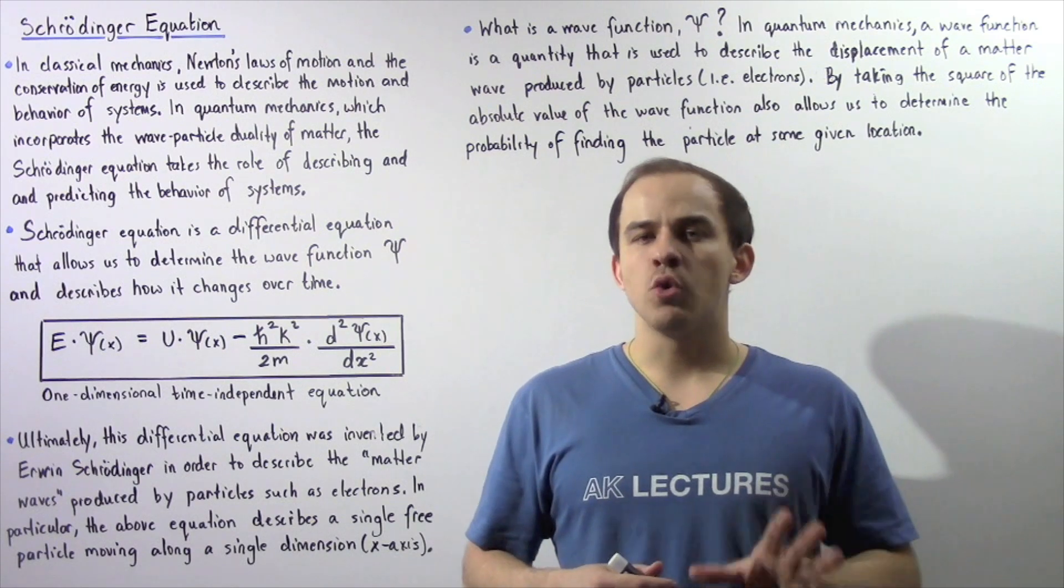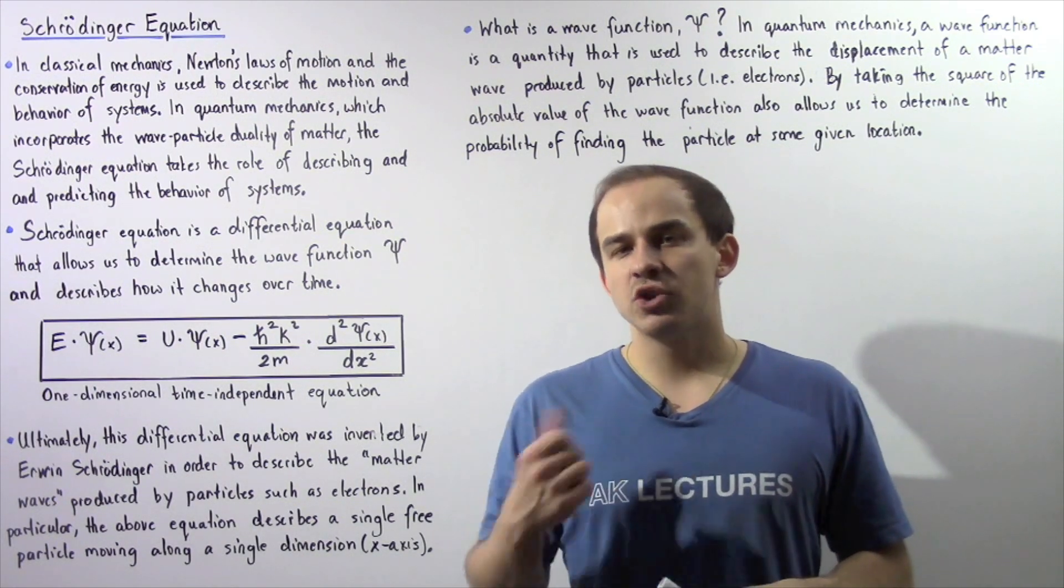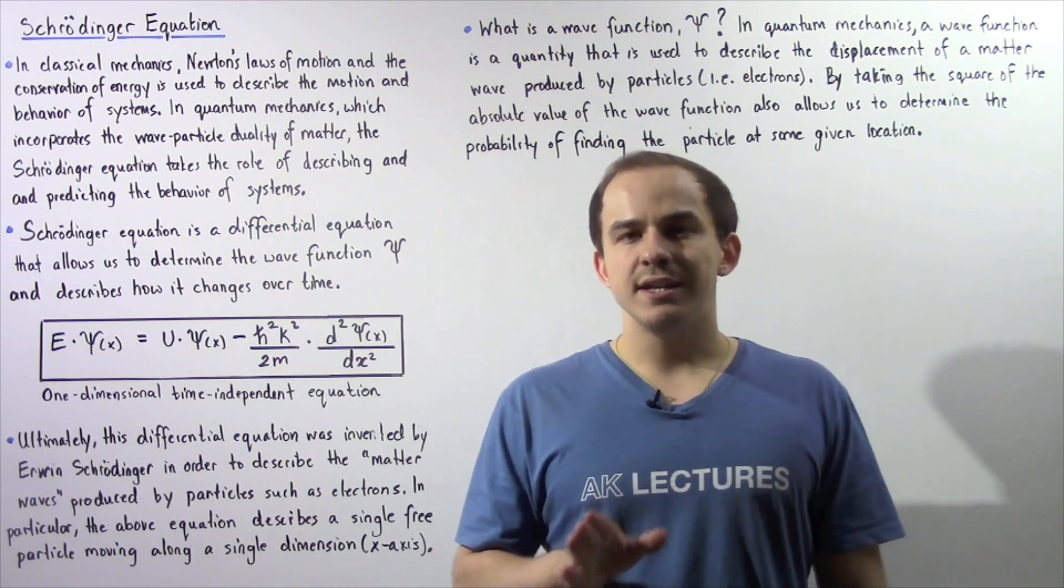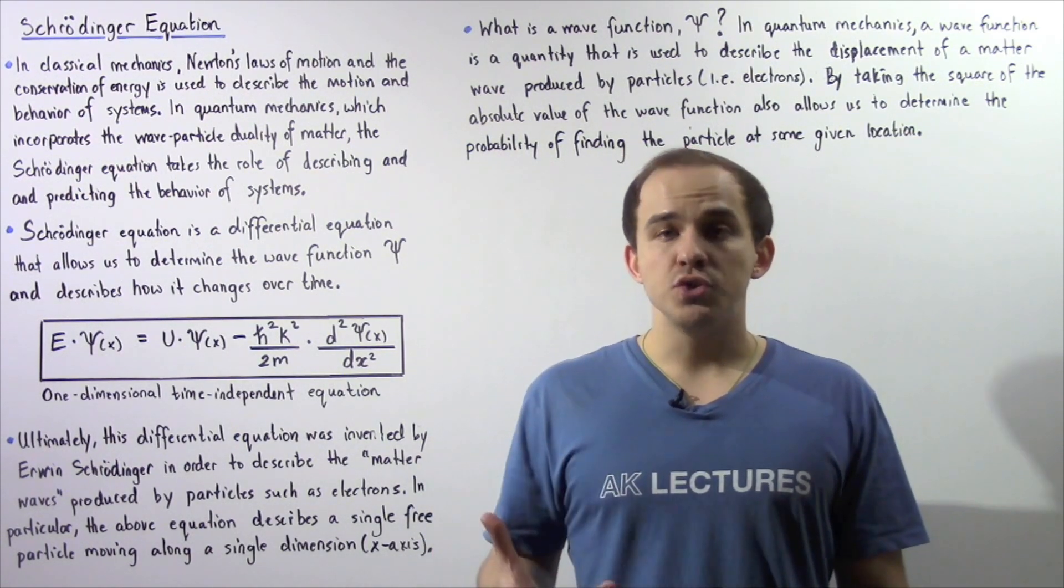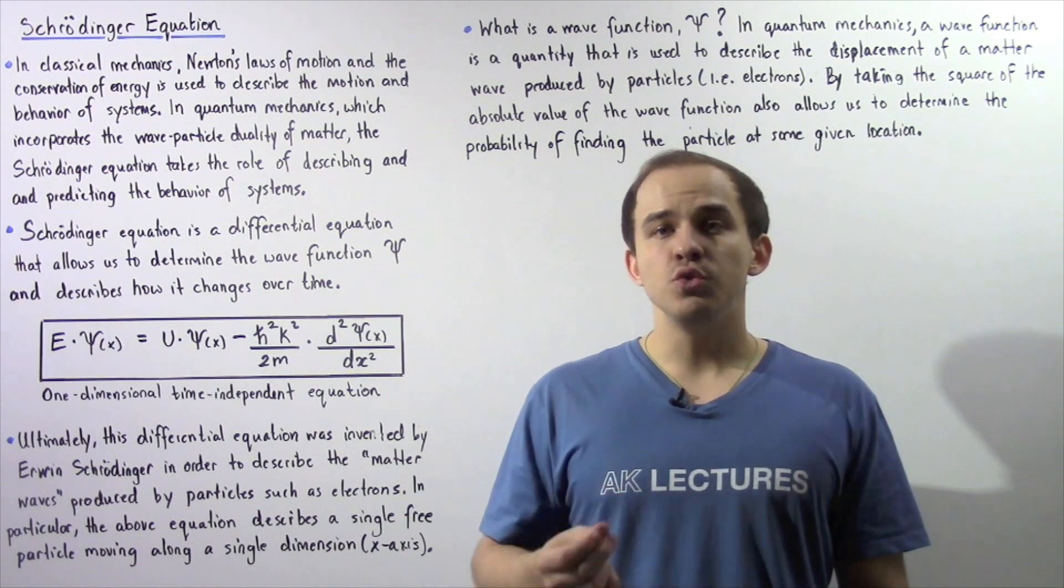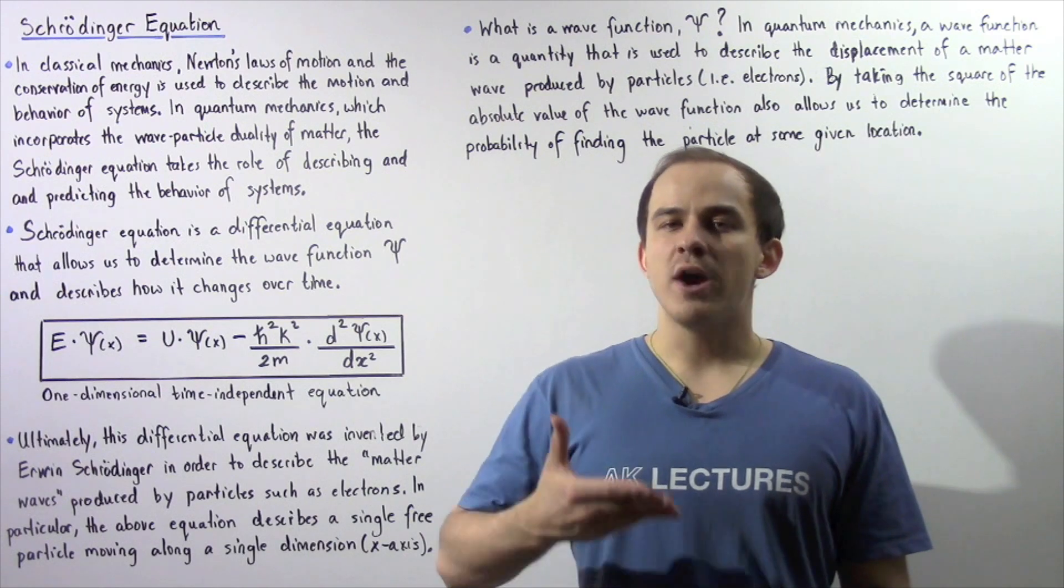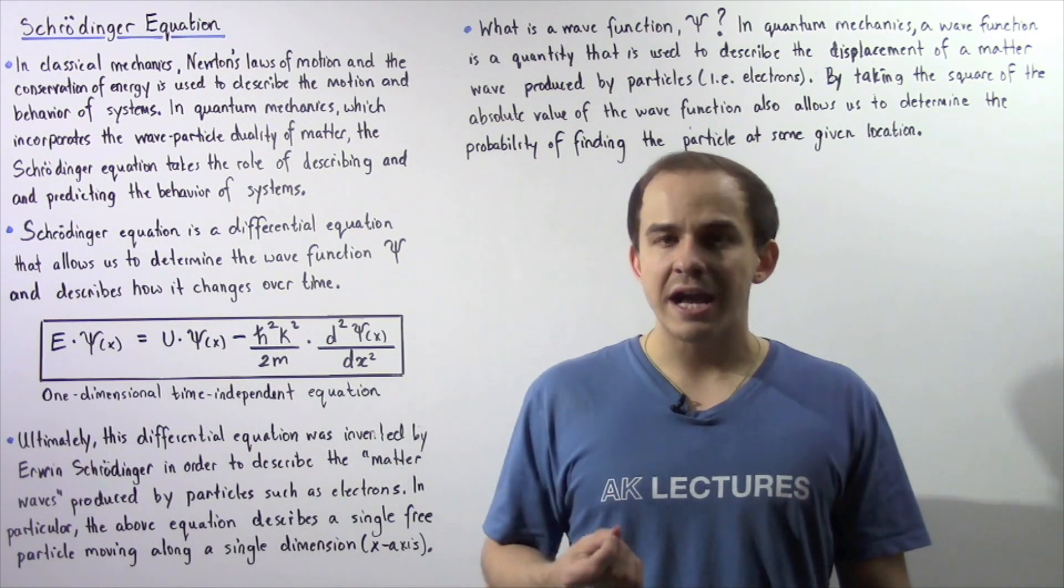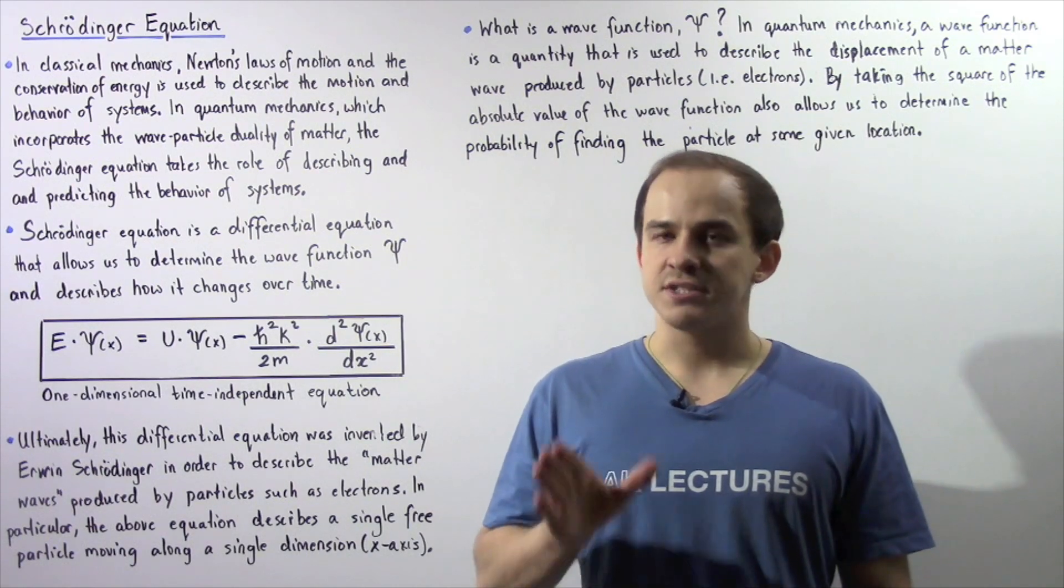Now first let's recall the difference between classical mechanics and quantum mechanics. In classical mechanics, we study the behavior and motion of an object by using a certain set of laws. We use Newton's laws of motion as well as the law of conservation of energy to study and describe the behavior of our system.